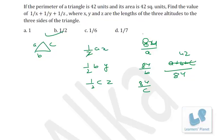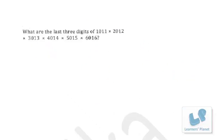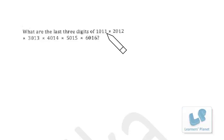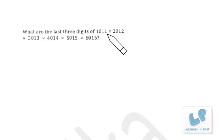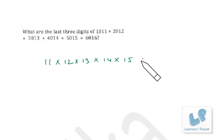Now, what are the last three digits of 1011 × 2012 × 3013 × 4014 × 5015 × 6016? To find last three digits, divide by 1000. For last two digits divide by 100. The individual last three digits: 1011 mod 1000 = 11, so we compute 11 × 12 × 13 × 14 × 15 × 16.